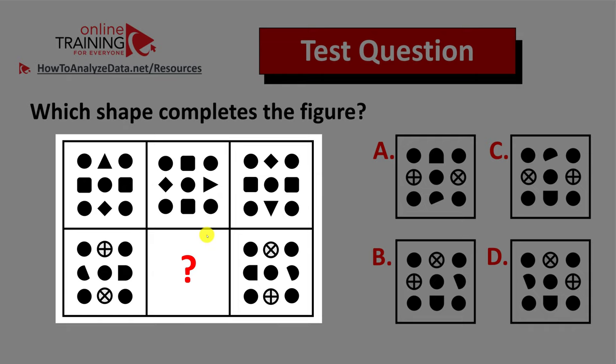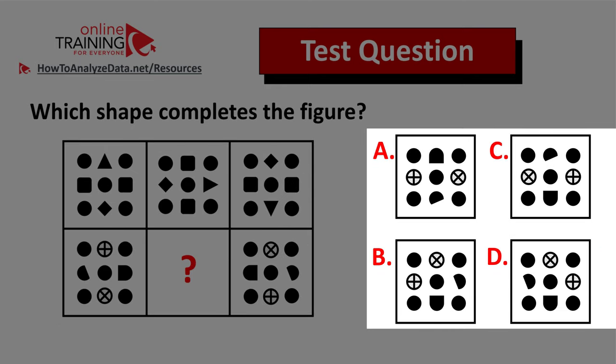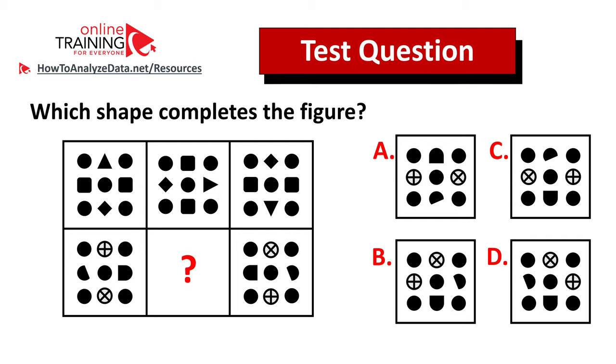You need to determine which shape completes the figure and you're presented with four different choices: choice A, B, C and D. All of these choices look very similar.